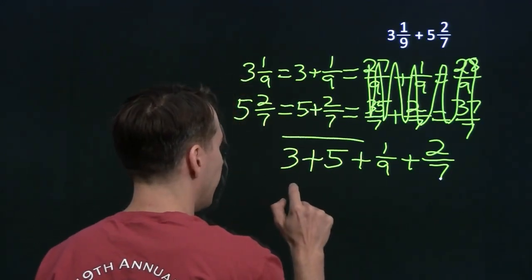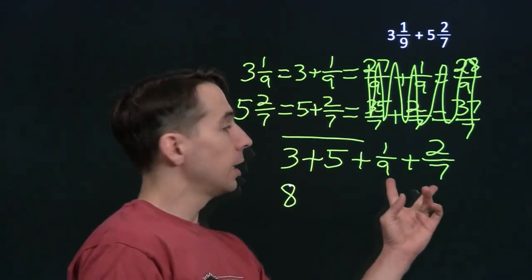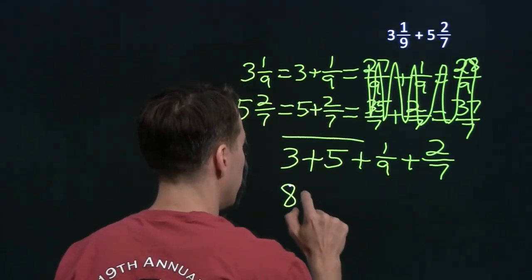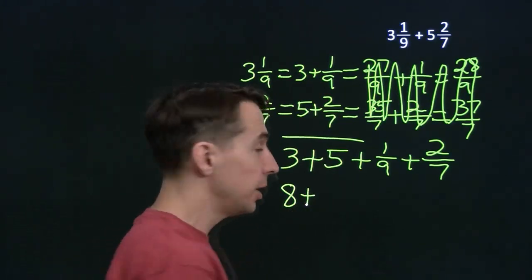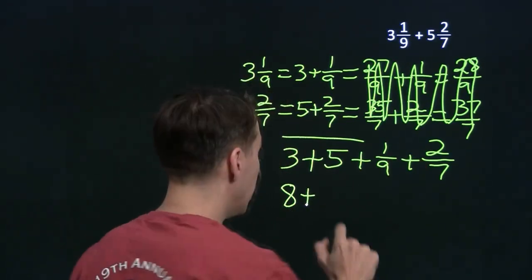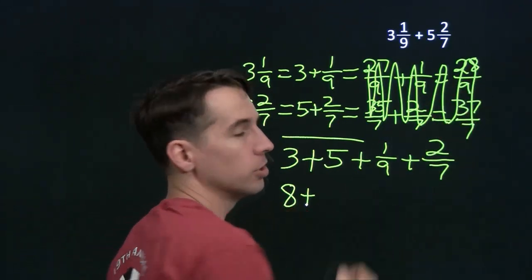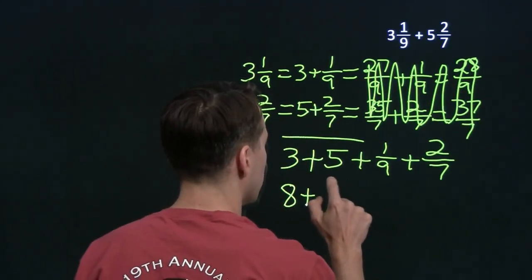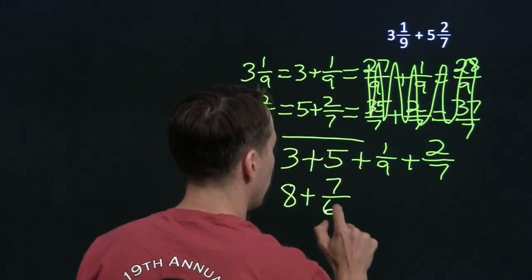That's a lot easier to deal with. The 3 and the 5, of course, that's just 8. And again, we're going to find a common denominator here between 1 ninth and 2 sevenths. That common denominator is still 9 times 7. Multiply the top and bottom of the 1 ninth by 7. Multiplying 1 by 7 is a lot easier than multiplying the 28 by 7. That gives us 7 over 63.